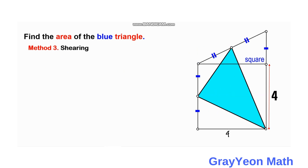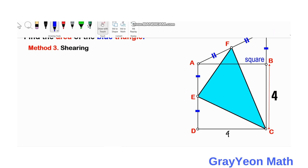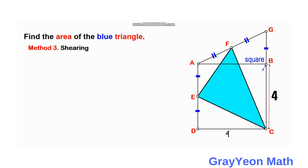For Method 3, we can use shearing. First we need to draw a line from B that is parallel to FE. Note that there should be the same perpendicular height from F to that segment.